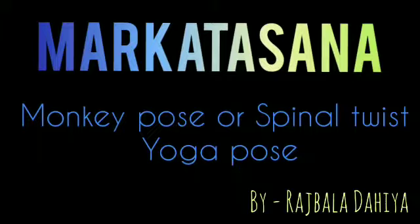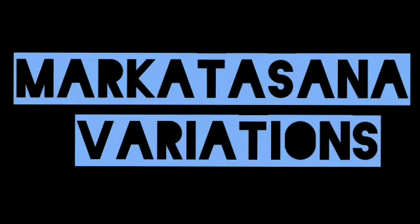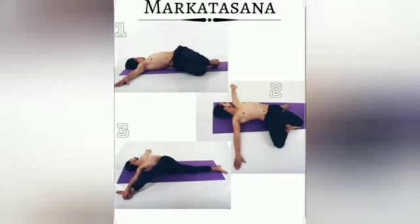Hello students, welcome. In today's session we will do Markatasana — the monkey pose or spinal twist yoga pose. There are three variations in Markatasana. In the first pose, you have to join your legs from knees to foot. In the second, you have to join the knee of one leg with the foot of the other.